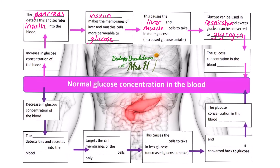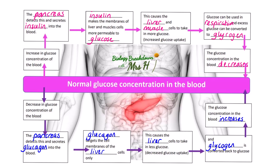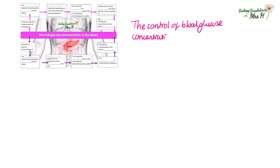The glucose concentration in the blood will decrease and return back to normal, or its optimum. If there's a decrease in the glucose concentration of the blood, the pancreas detects this and secretes glucagon into the blood. Glucagon targets the cell membranes of the liver cells only. This causes the liver cells to take in less glucose — a decreased glucose uptake — and glycogen is converted back to glucose, which diffuses back into the blood, increasing the glucose concentration back to normal.